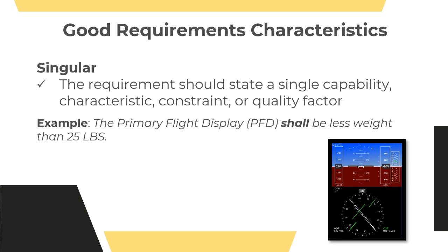This example can work in two ways. We can give a weight with a tolerance if there's a target weight we need to hit. But generally, it is not best practice to simply say the PFD shall be 25 pounds — because the question becomes: what happens when it's half a pound over or half a pound less? Those elements of requirement capture will be dealt with in a different session on writing good requirements.